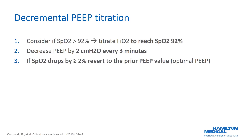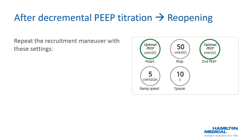Consider decreasing FiO2 before the recruitment maneuver to reach an SpO2 value of 92%. Decrease PEEP by 2 cm of water every 3 minutes. Monitor SpO2 to determine the optimal PEEP value. As soon as oxygenation decreases with PEEP titration — specifically an SpO2 decrease by 2% — revert to the prior PEEP value, otherwise classified as the optimal PEEP. Repeat the recruitment maneuver with these settings.